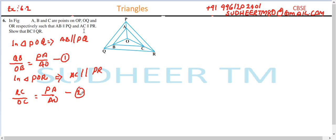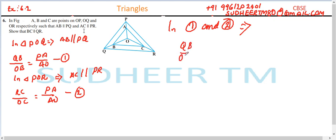In equation one and two, the right-hand sides are the same — both equal PA by AO — so we can equate the left-hand sides. Therefore: QB divided by OB is equal to RC divided by OC. Let this be equation number three.